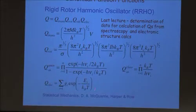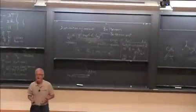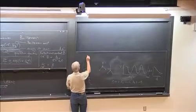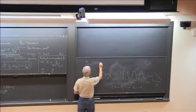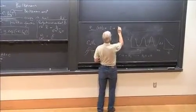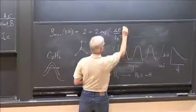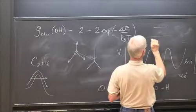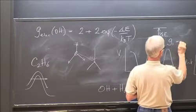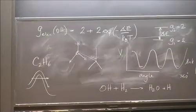The electronic partition function is taken directly from the standard expression and is important for something like OH. If we look at the electronic partition function for OH, there are two energy levels which are quite close together. Q_electronic for OH equals 2 plus 2 times the exponential of minus ΔE over k_B T, where ΔE is the spacing of those two energy levels. The degeneracy of the lower level g₁ equals 2, and the degeneracy of the upper one also equals 2. So if you're dealing with OH, you've got to worry about this electronic partition function.